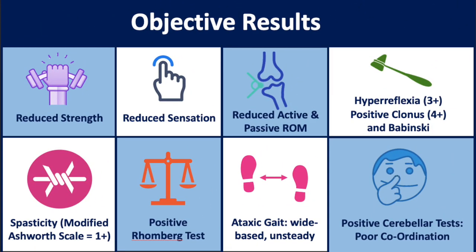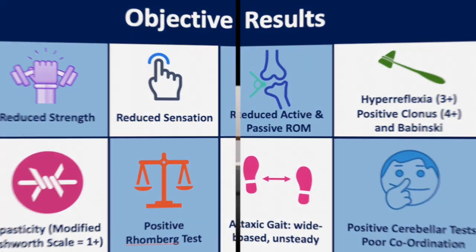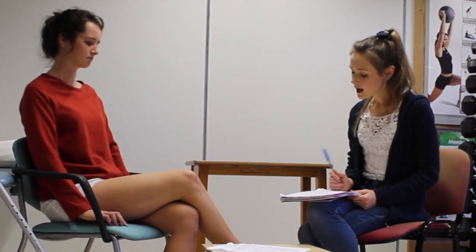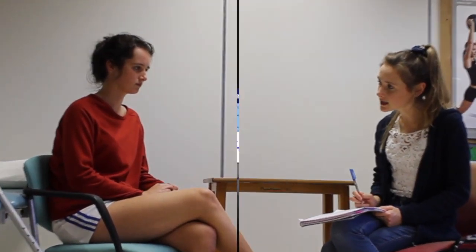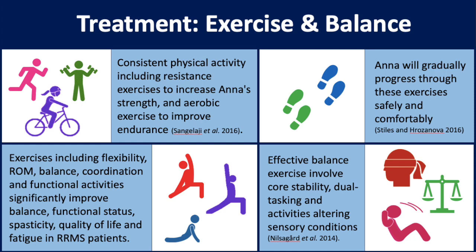Take a look at the findings from the objective examination — don't forget to pause the video to take notes. Now let's create a plan to get the most out of our work together. Anna: I'd love to improve my walking and not be so tired all the time. Physio: Let's write down some of those goals. You said you'd like to improve your walking — what do you think you could do to achieve this? Anna: Maybe if my legs weren't so weak I could strengthen them up, and maybe some balance work too. Physio: Consistent physical activity including resistance exercises can increase Anna's strength, and aerobic exercise can improve endurance. Anna will gradually progress through these exercises safely.